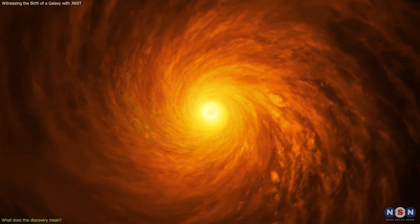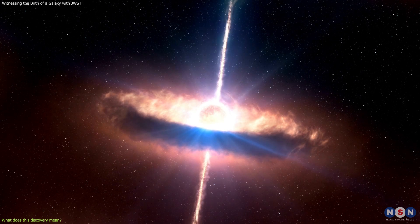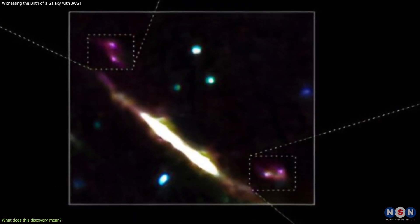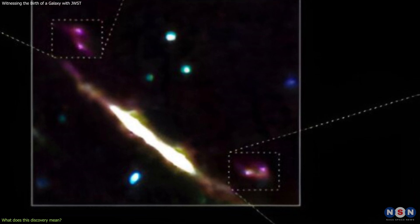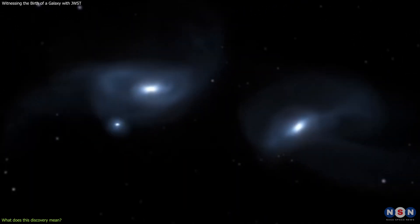They can also trigger the growth of supermassive black holes at their centers, which can affect their surroundings with powerful jets and winds. This baby galaxy is one of the first examples of a merger-driven galaxy in the early universe that we can observe directly with high-resolution images and spectra.